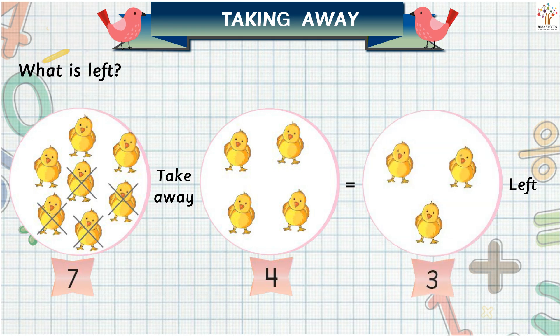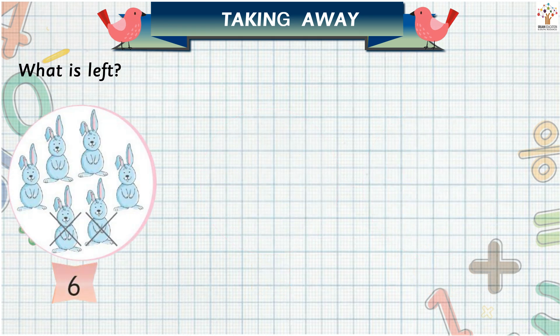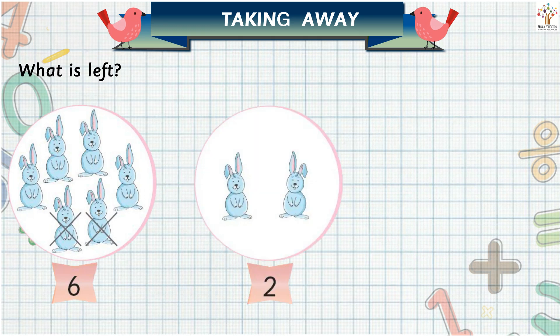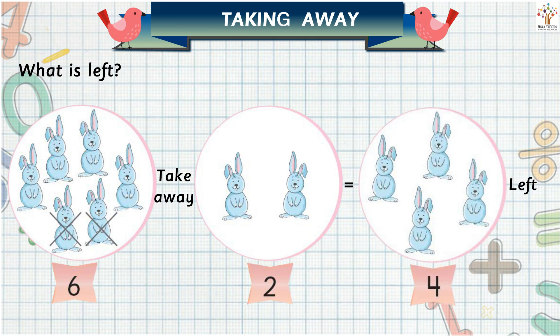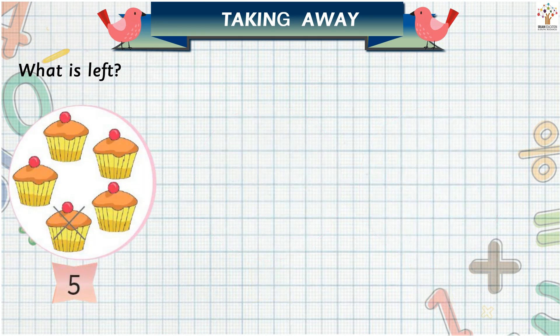So there are three chickens left. There are six rabbits, then we take away two rabbits. Now how many rabbits are left? Four minus six is equal to two, so there are four rabbits left.